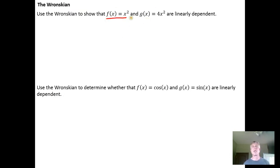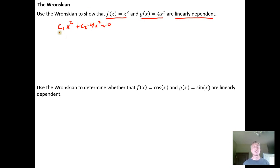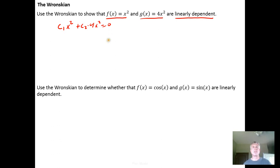For example, consider the functions x² and 4x², which should be clearly linearly dependent. The equation c₁x² + c₂(4x²) = 0 has infinitely many non-trivial solutions: pick c₂ = 1 and c₁ = −4, or c₂ = 2 and c₁ = −8. But let's verify this with the Wronskian of x² and 4x², which we know are linearly dependent.